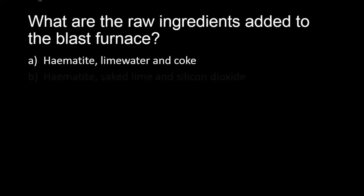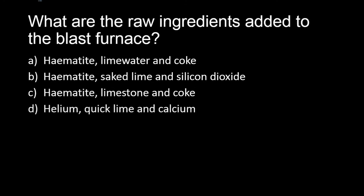What are the raw ingredients added to the blast furnace? A. Hematite, lime water and coke, B. Hematite, slaked lime and silicon dioxide, C. Hematite, limestone and coke, D. Helium, quicklime and calcium. Well, the answer is hematite, limestone and coke, C.